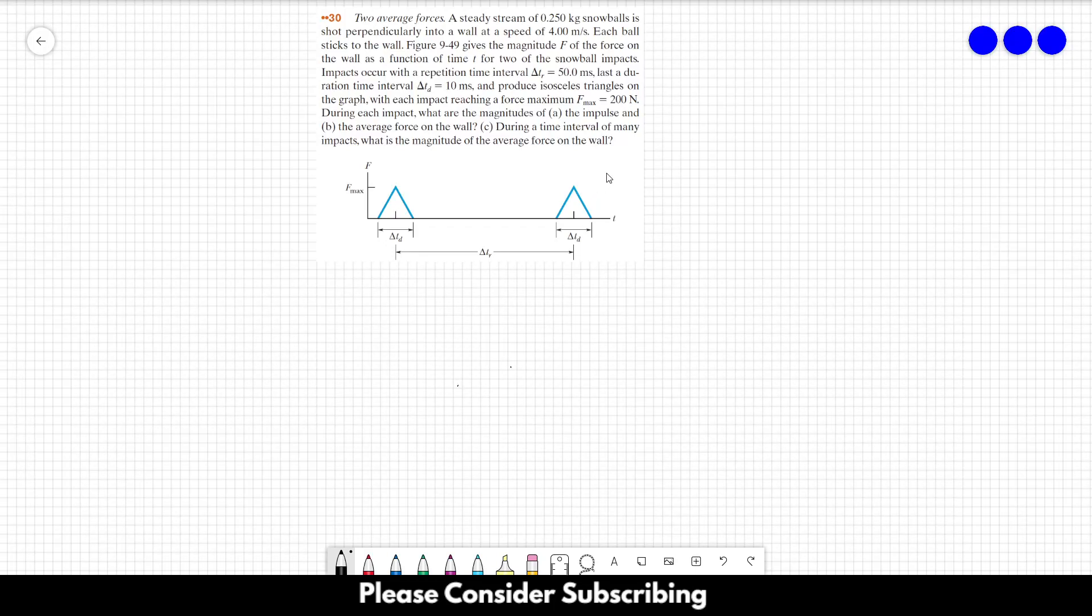Number 30! A steady stream of 0.25 kg snowballs is shot perpendicularly into a wall at a speed of 4 meters per second. Each ball sticks to the wall.